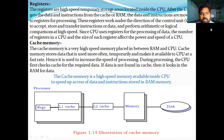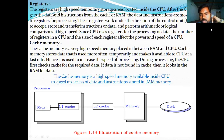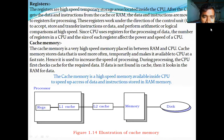Next is cache memory. They will ask questions about cache memory — sometimes for 3 marks, sometimes for 1 mark, sometimes for 2 marks. So what is cache memory? Cache memory is a very high-speed memory placed between the RAM and CPU. The cache memory stores data that is used more often, temporarily, and makes it available to the CPU faster. If the data is not stored in the cache memory, the system looks into the RAM for the data. For 1 mark, the definition is: cache memory is a high-speed memory available inside a CPU to speed up access of data and instructions stored in RAM memory.